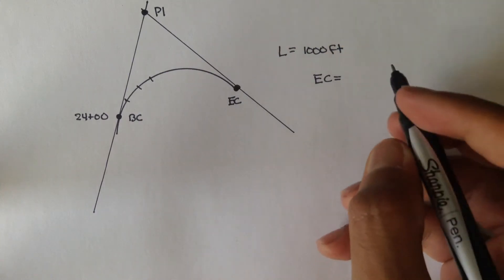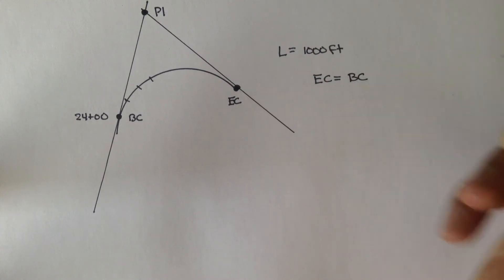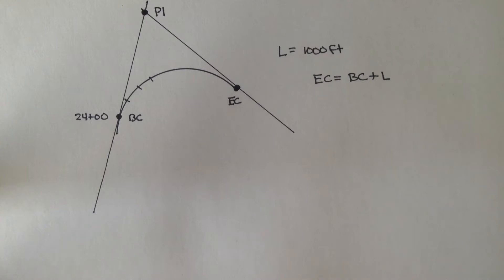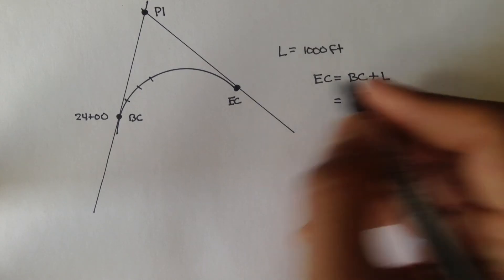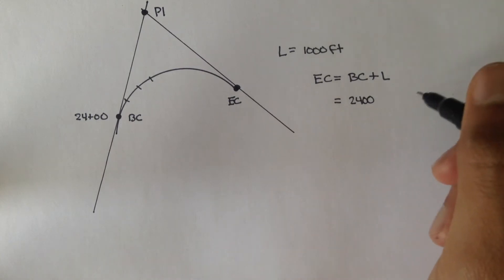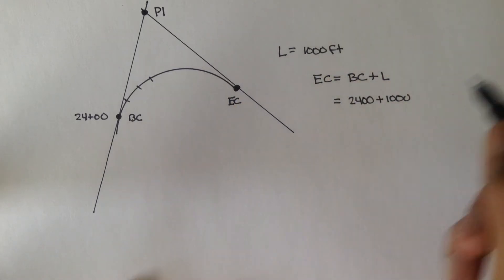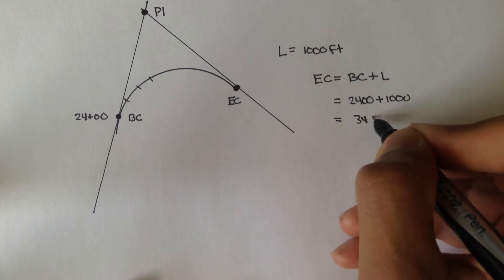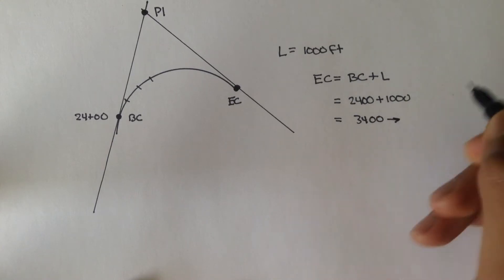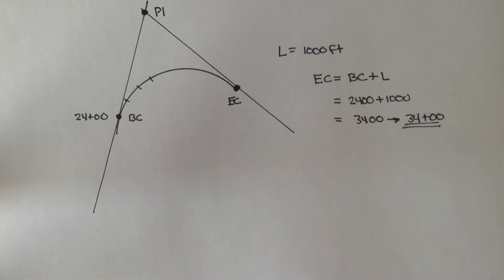So what you're going to do is, EC is equal to the beginning of curve, plus your length of the curve. And your BC is 24 plus 0, 0, or we can just say 2,400 feet. That's the station it's at. And to that, you add 1,000 for the length of the curve, and you end up with 3,400. Or in station form, that's 34 plus 0, 0. So the station of the ending, or the end of curve, is at 34 plus 0, 0.